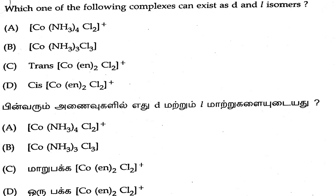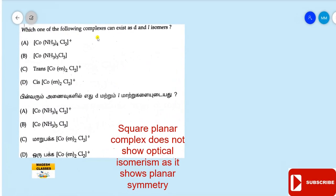This is a topic from optical isomerism in octahedral complexes. Let us move into the question part. Which one of the following complexes can exist as d and l isomers? The concept is optical isomerism in coordination compounds.